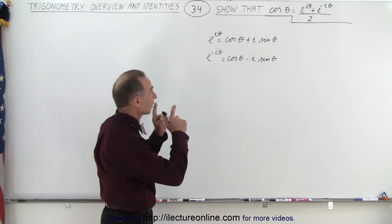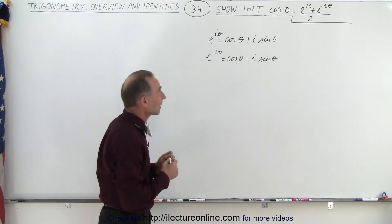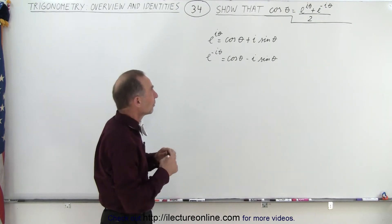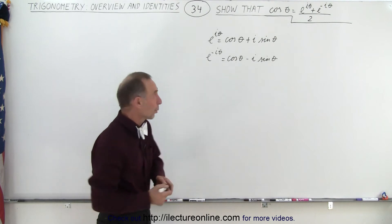And therefore we're now going to show that the cosine of theta equals e to the i theta plus e to the minus i theta divided by two. And this will be a quick simple video.